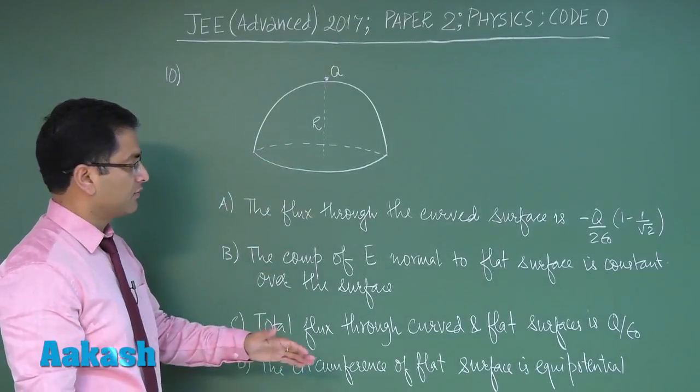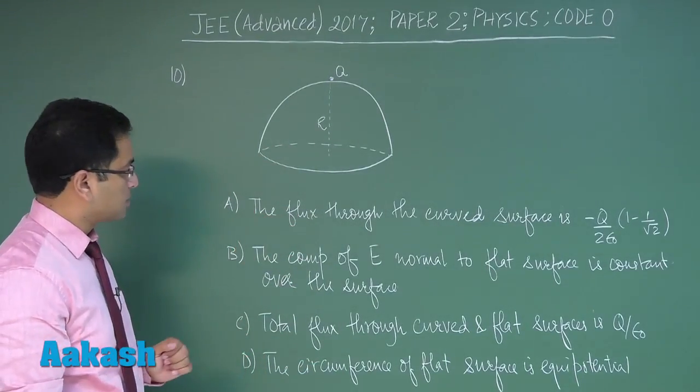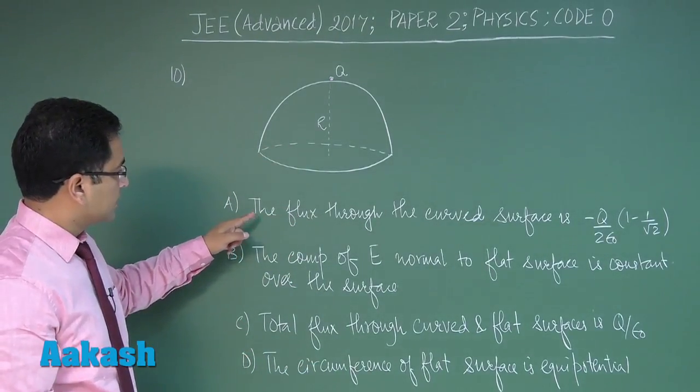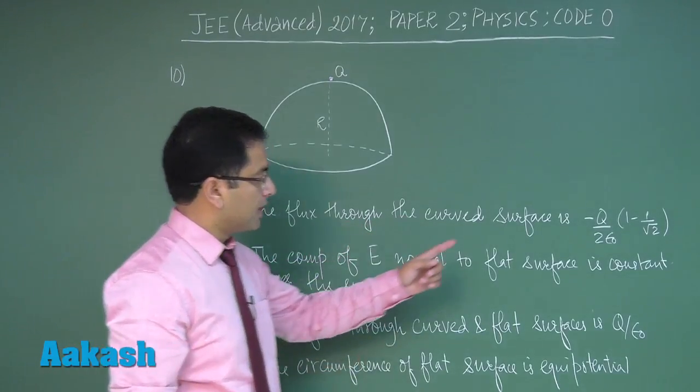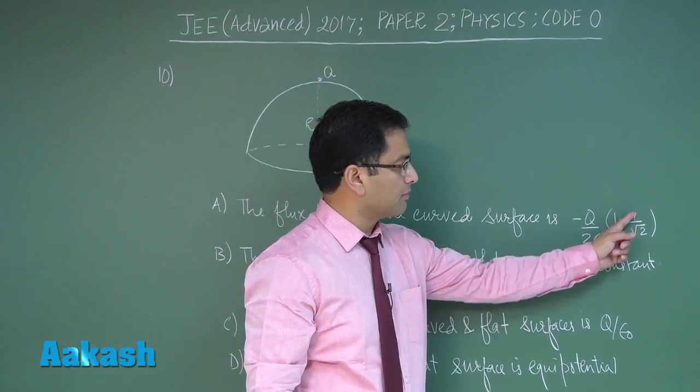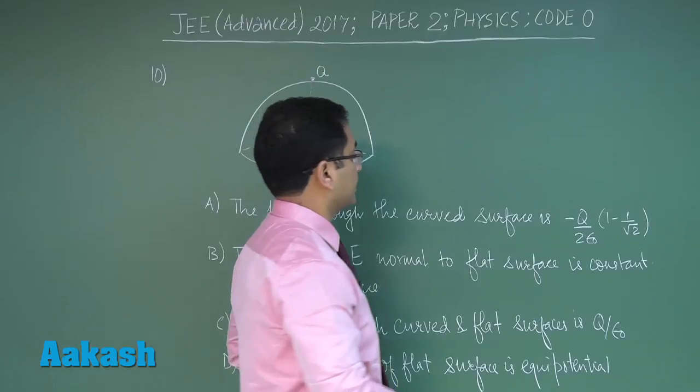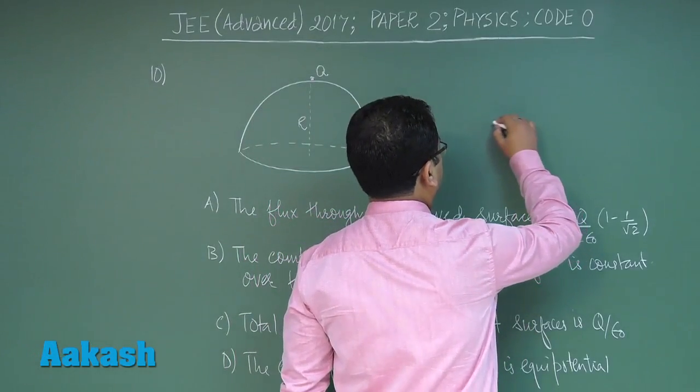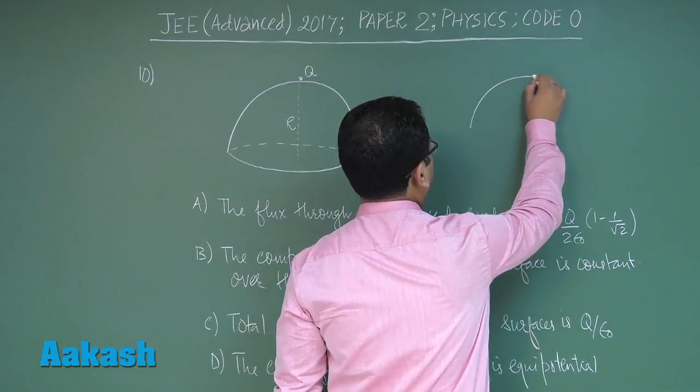Based on this we need to solve these options. The first says the flux through the curved surface is minus Q by 2 epsilon naught times 1 minus 1 by root 2. Let's see how to calculate flux through the curved surface.